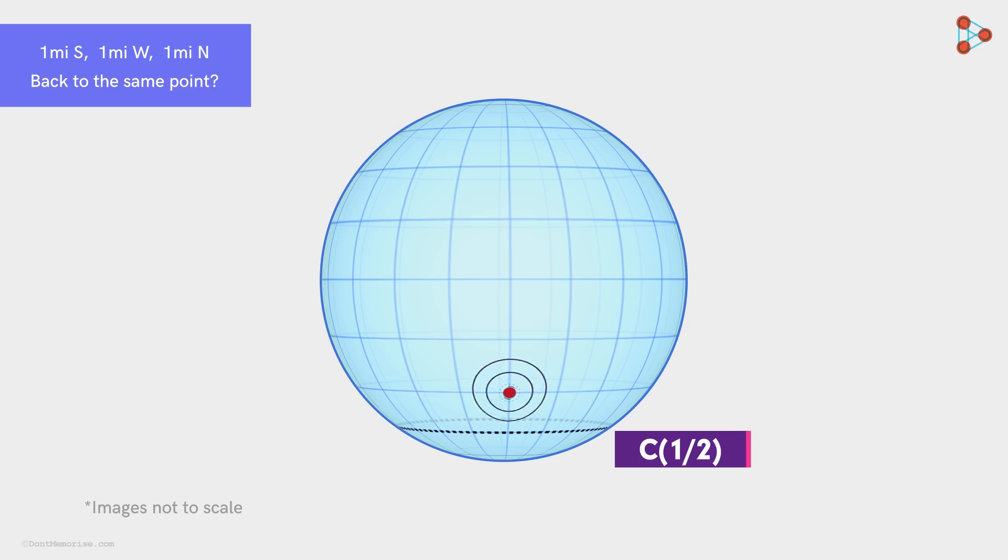Now, let's take one point north of this circle. We travel one mile south first to land on the circle C1 half. To travel one mile west, we will need to travel two loops around this circle and we will be back at the same point.